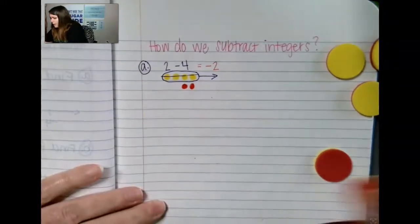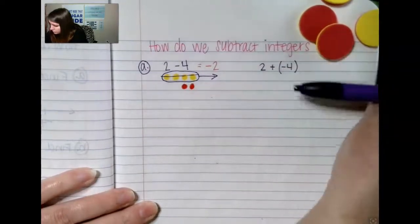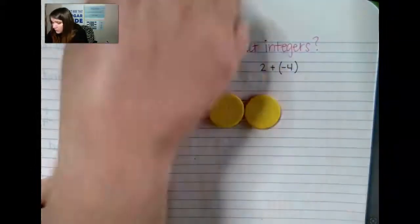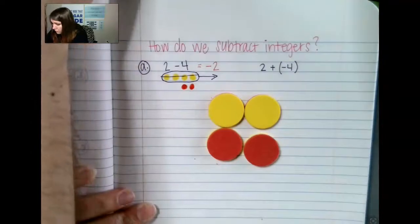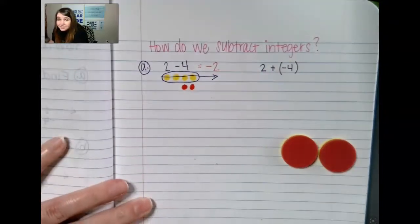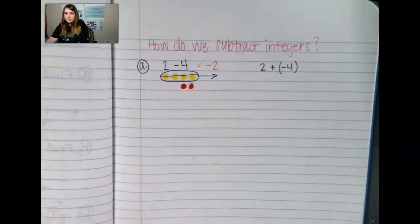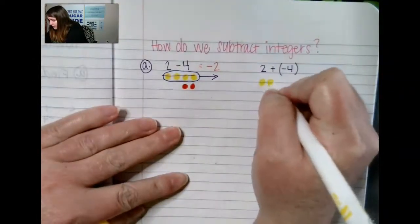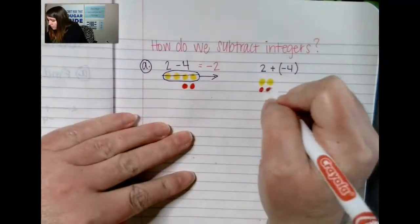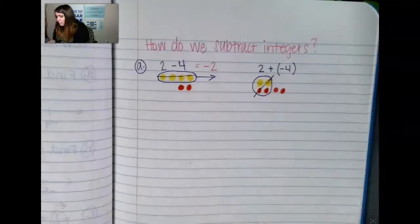So let's look at this problem in a different way. If we would have written this problem as 2 plus a negative 4, would I get the same answer? Well, let's look at it. I have 2 and I'm going to add on negative 4 — here's my 4 reds. I take away my 0 pairs and I'm left with negative 2. Subtraction no longer exists because I've added on and gotten the exact same answer.